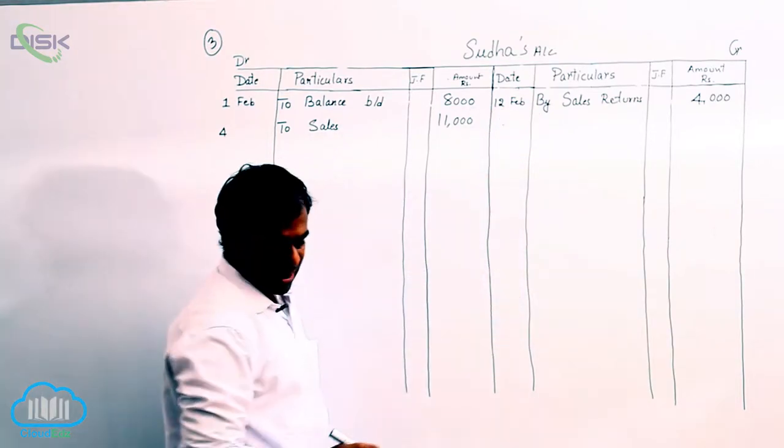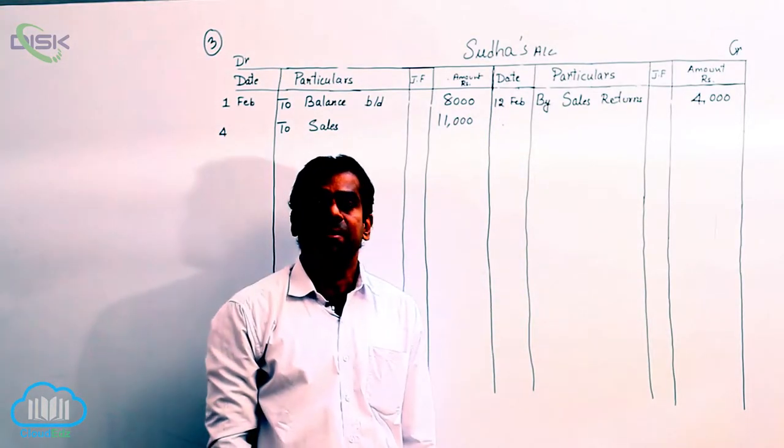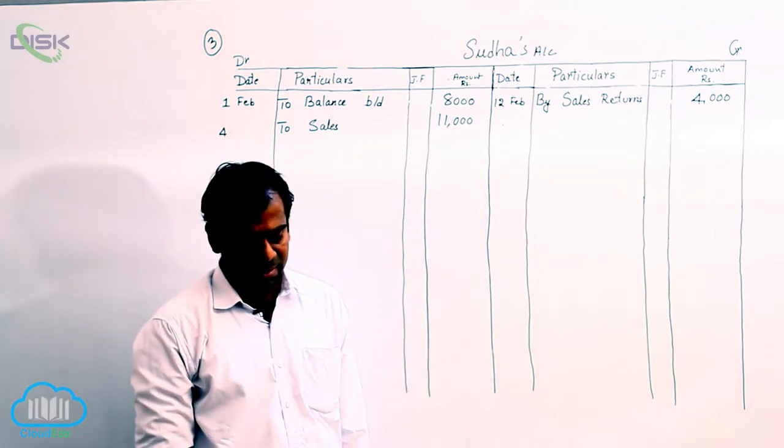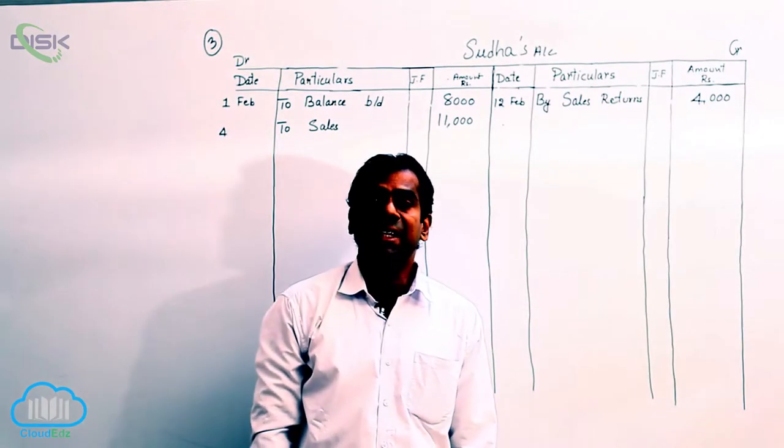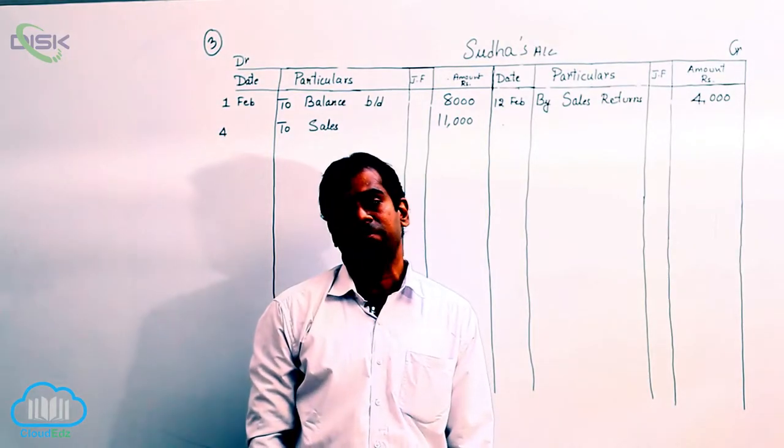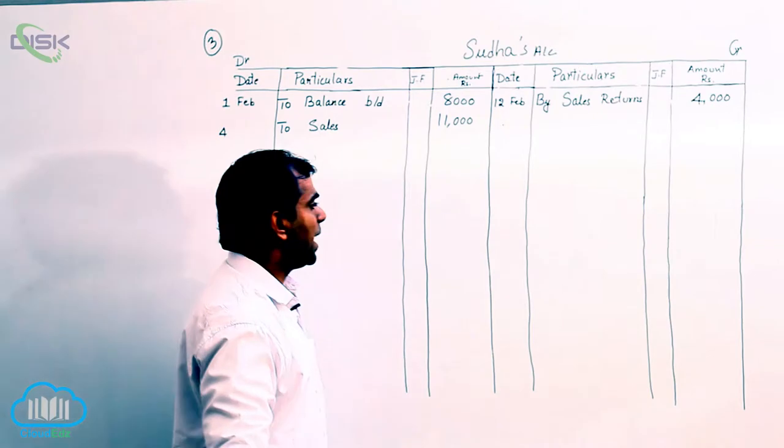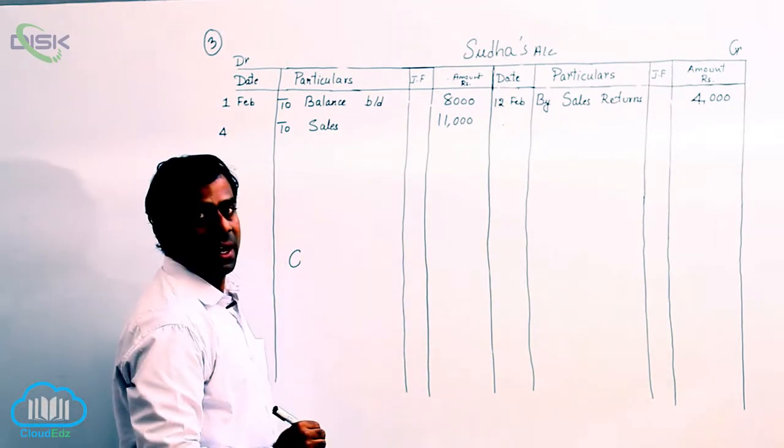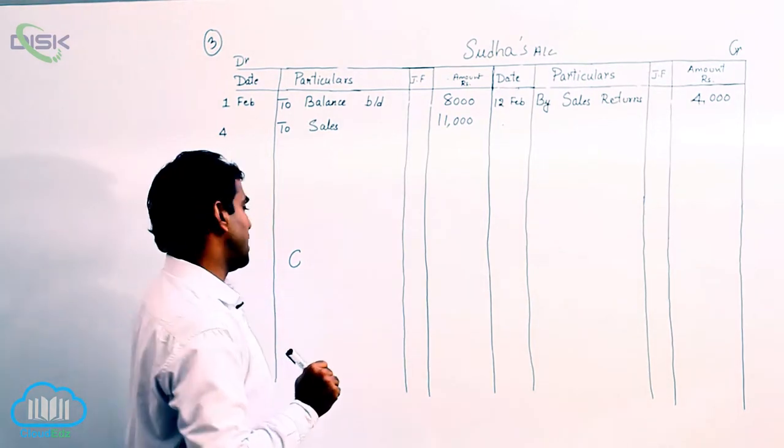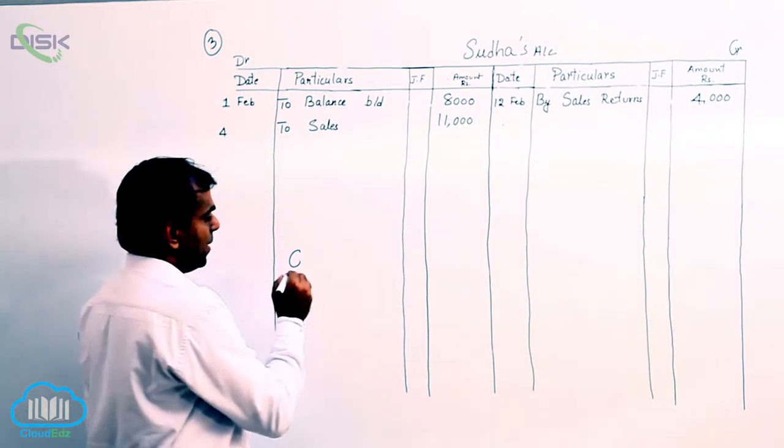Now the next transaction is on 22nd. Sorry, the next transaction is on 16th. It states that cash received from Sudha. If we journalize this transaction, cash being real account, we have to debit it. And Sudha being personal account, she is the giver. We have to credit her.